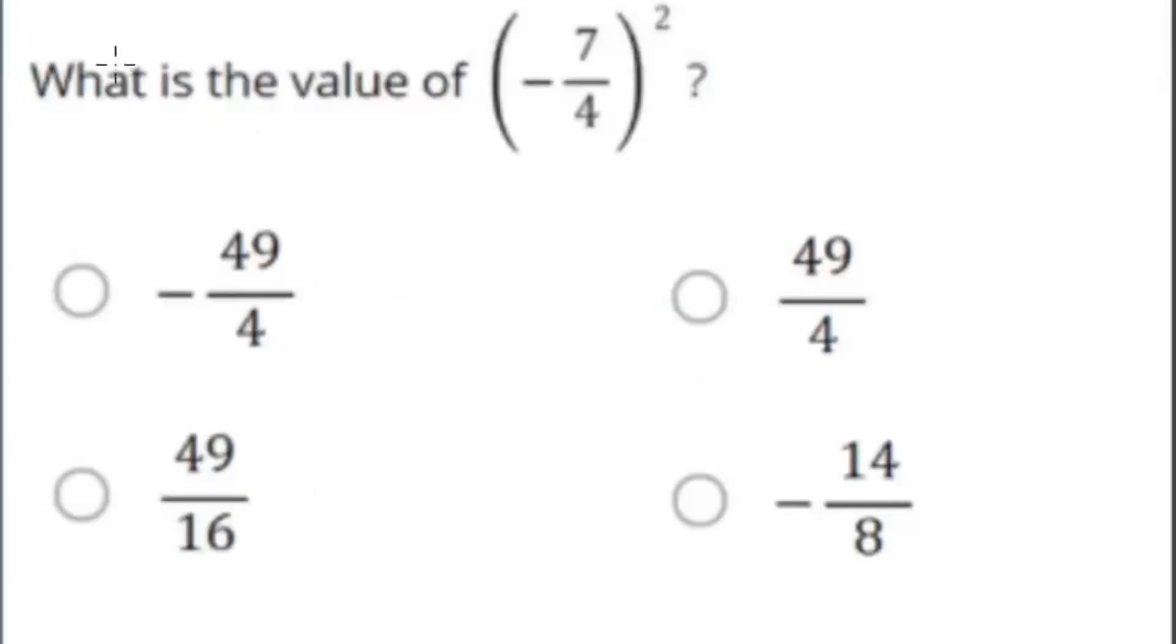This question asks us, what is the value of negative 7 over 4 squared? So this is a really straightforward question. To answer it, I'd like to rewrite this. I'm going to do negative 7 over 4 multiplied by negative 7 over 4. Now if we know the rule for multiplication of fractions, if we do negative 7 times negative 7, we get a positive 49. And if we do 4 times 4, we get 16. So the answer is 49 over 16.